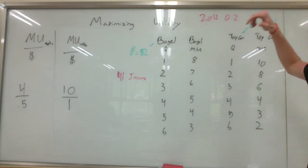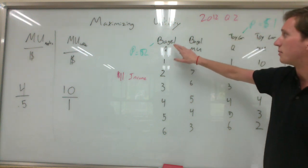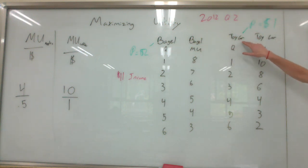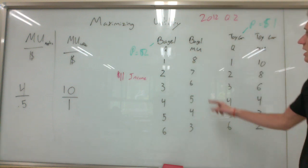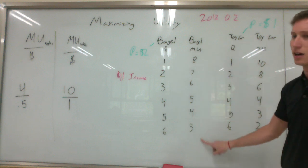This person is consuming either a bagel or buying a toy car. So here's the quantity of bagels, the quantity of toy cars, and the marginal utility of each.